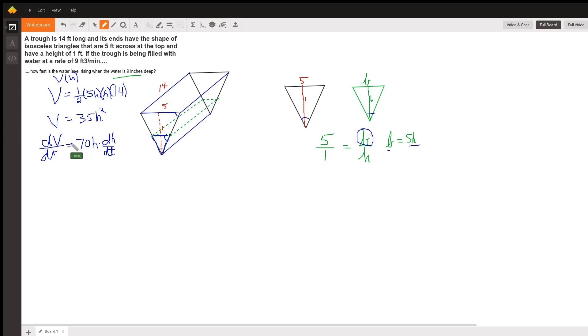and now we substitute what we know into this formula we know that dv dt is 9 cubic feet per minute and I'm going to go to red so this is 9 feet cubed per minute equals we want to know what dh dt is at the point in time when h is 9 inches the key is everything else is in feet so we got to convert 9 inches